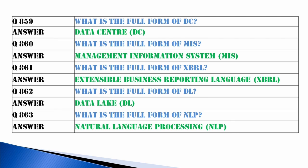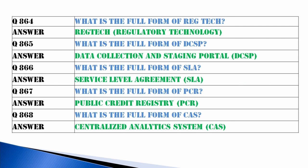What is the full form of DC? Data Center. What is meant by MIS? Management Information System. What is meant by XBRL? Extensible Business Reporting Language. What is DL? Data Lake. What is NLP? Natural Language Processing. What is RegTech? Regulatory Technology.